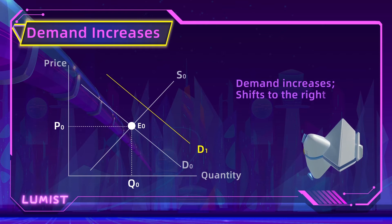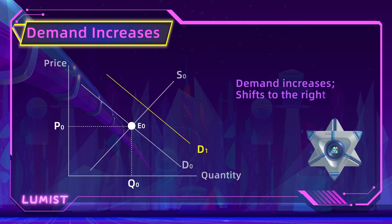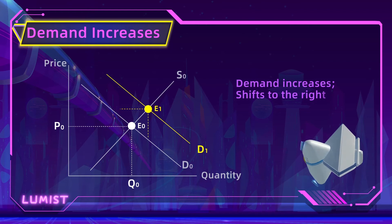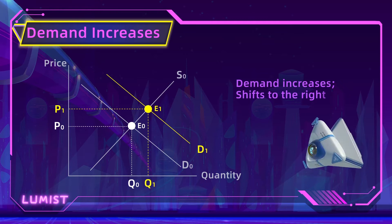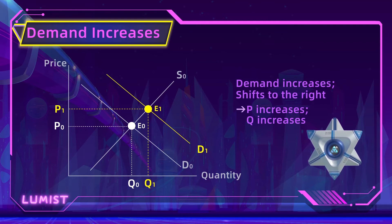As demand shifts towards the right, the intersection of demand and supply will move accordingly. So we're going to have a new equilibrium point at E1. At this point, we have a new price P1 as well as a corresponding quantity Q1. Both of these are now higher than before — P1 is higher than P0 and Q1 is higher than Q0.